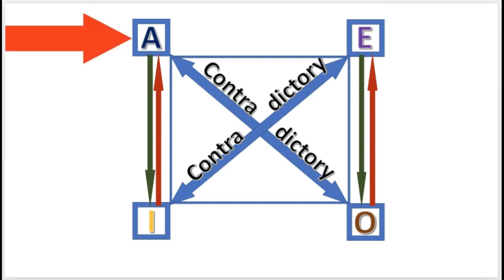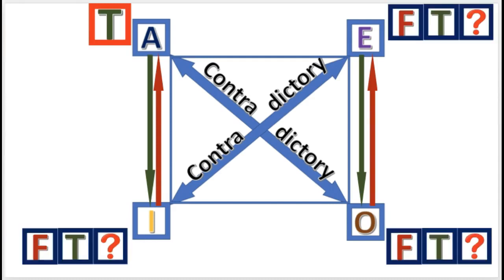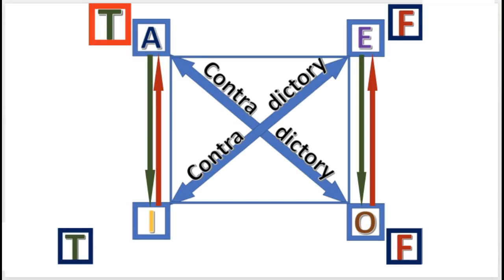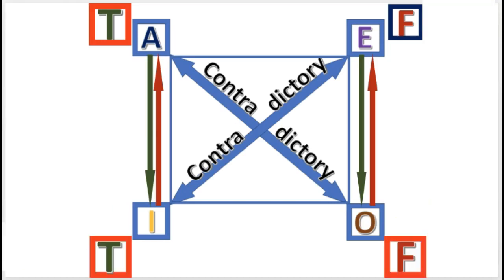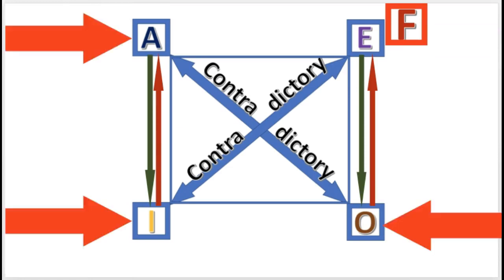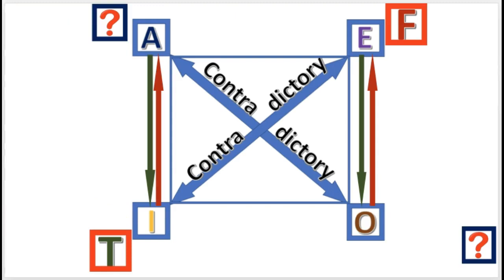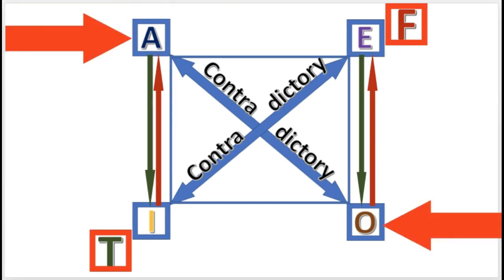Next practice problem: If A is true, what are the other truth values? The answer: O is false, I is true, and E is false. Final practice problem: If E is false, what are the other truth values? The answer: I is true, and A and O are undetermined.